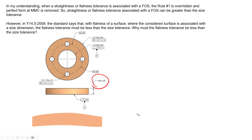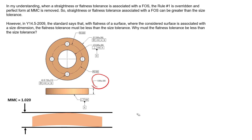If we consider this irregular part, we know based on Rule #1 and this size dimension that we have to be within an envelope of perfect form at MMC. So if we draw a perfect form envelope whose size is 1.020, our feature has to fit inside this envelope. Any local size measurements — a two-point check — have to be 0.980 or more. We can't be less than the LMC value, so every local size must be between 0.980 and 1.020.